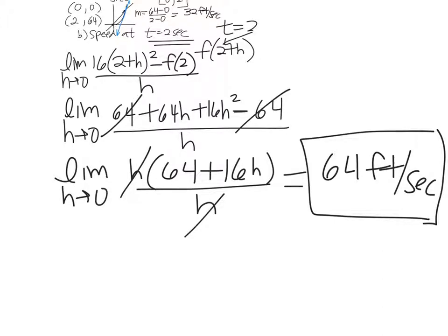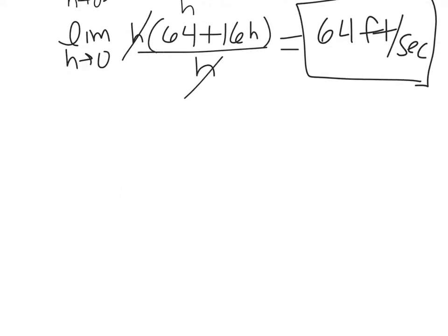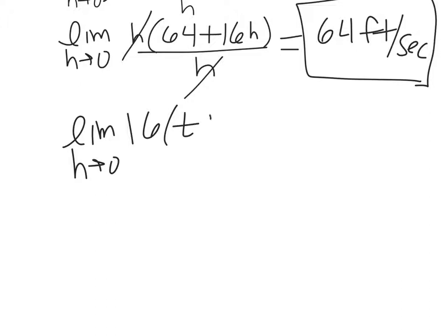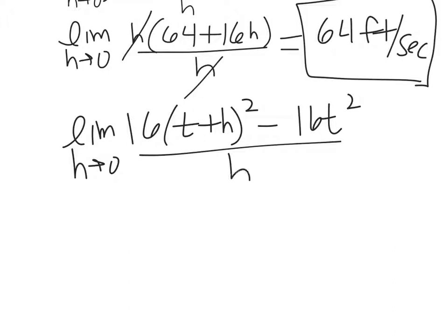Alternatively, you could have done the limit as h goes to 0 of 16 times t plus h squared minus 16t squared, all over h — keeping it general — and then at the very end plug in t equals 2 to still get the same answer. I just plugged it in at the beginning instead of the end.